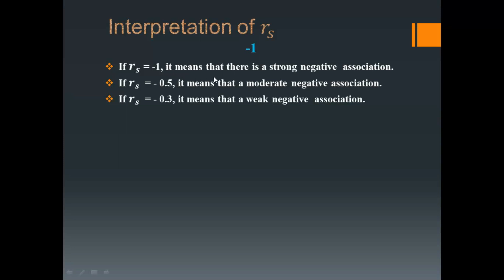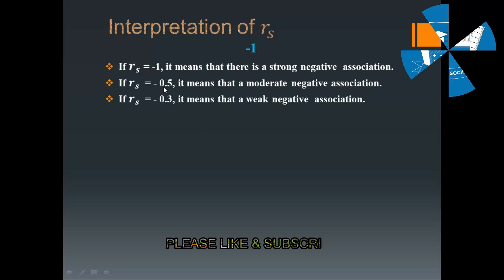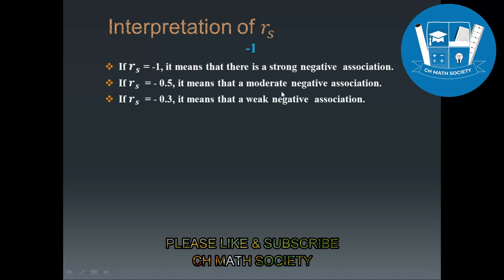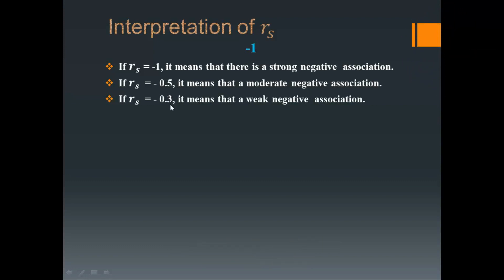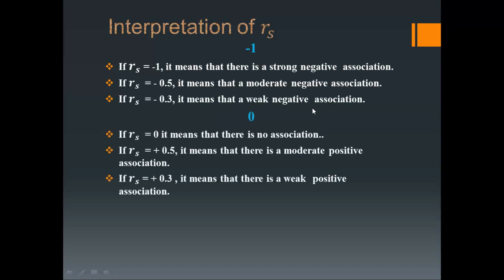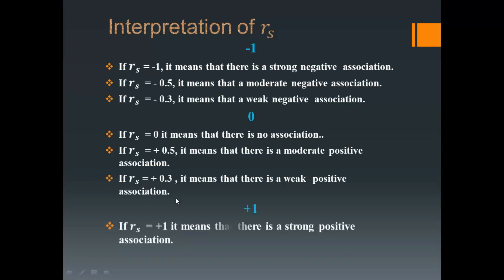If the value is negative 0.5, it means there is a moderate negative association. If the value is less than 0.5, such as 0.3 or 0.2, it means there is a weak negative association. If the value is exactly 0, it means there is no association. If it is positive 0.5, it means there is a moderate positive association. If positive 0.3, it means there is a weak positive association. And if the value is exactly plus 1, it means there is a strong positive association.